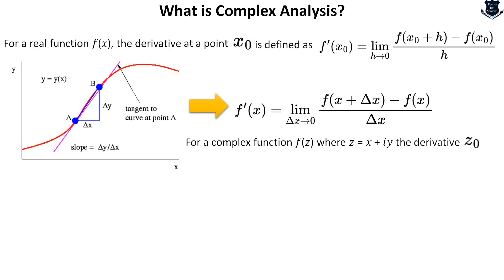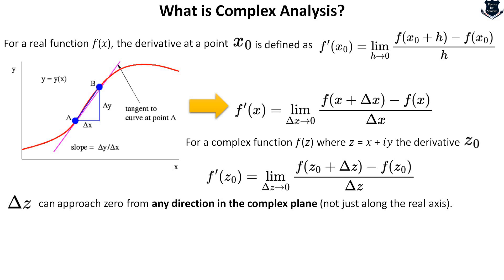Now if I use a complex function f of z, instead of delta x or h moving towards zero, the derivative at z zero we get something like this. The question arises: what happens when delta z can approach zero? It can approach zero from any direction in the complex plane, not only the real axis but from any direction. The limit must be the same no matter in which direction delta z approaches zero.